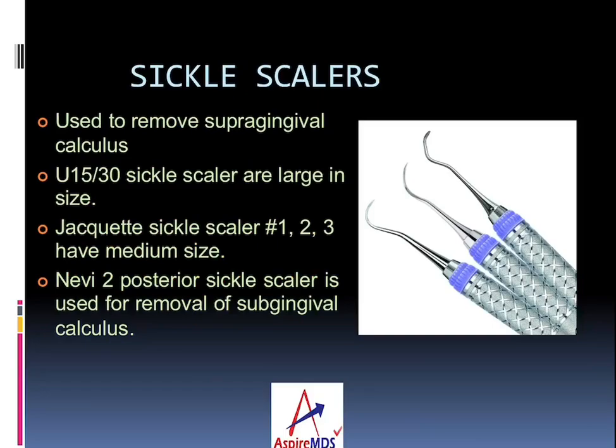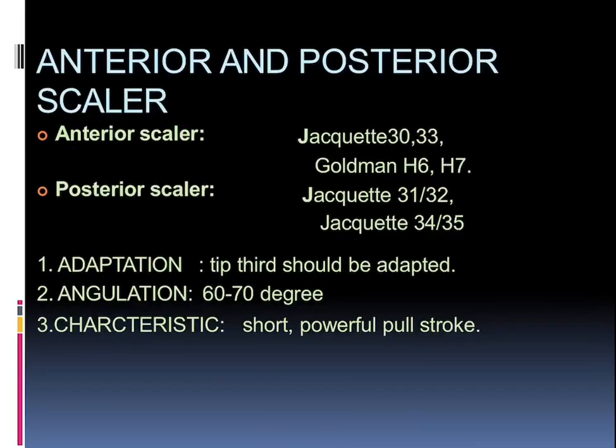Talking about sickle scalers: they are used to remove supragingival calculus. The U15/30 sickle scalers are larger in size, whereas the Jacquette sickle scalers have a medium size. The Navy 2 posterior sickle scaler is used for removal of subgingival calculus. Talking about anterior and posterior scalers: the anterior scalers are Jacquette 30, 33, and Goldman HF6 and H7; the posterior scalers are Jacquette 31, 32, and 34/35. The tip — the terminal third — should be adapted; the angulation should be at about 60 to 70 degrees and the stroke should always be a short, powerful, full stroke.